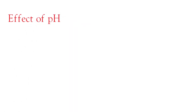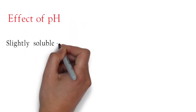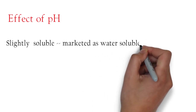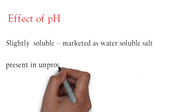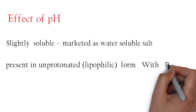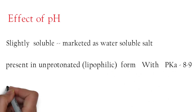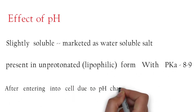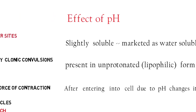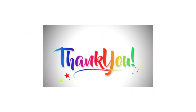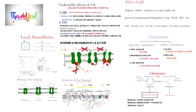Regarding the effect of pH on local anesthetics: these drugs are slightly soluble and are therefore marketed in a salt, water-soluble form. They have a pKa between 8 and 9, so they are unprotonated on the outside (extracellular side), but as soon as they enter the cell they become protonated. This is the chemistry and mechanism of local anesthetics.